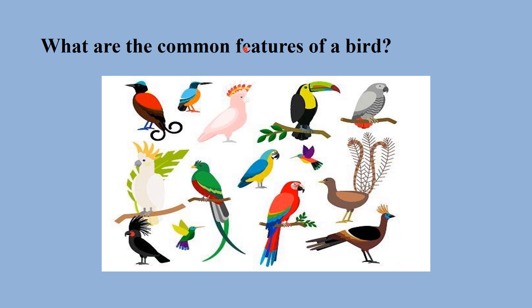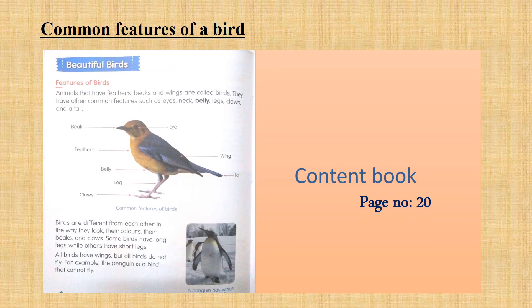What are the common features of a bird? What makes birds look different from other animals? Now open your content book to page number 20 and have a look. Here you can see the common features of birds. All birds have a beak, feathers, wings, and a tail. Other than these parts, they also have a belly, eyes, legs, and claws.